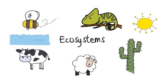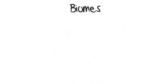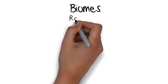Ecosystems can be as small as a pond or as large as a tropical rainforest, and each one is entirely self-sufficient. Major ecosystems are known as biomes and there are nine major biomes in the world.